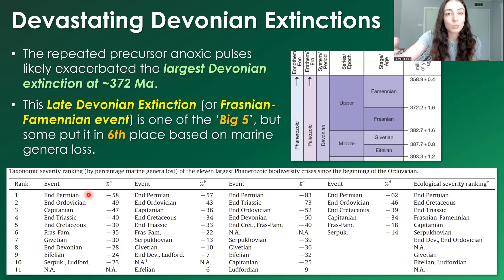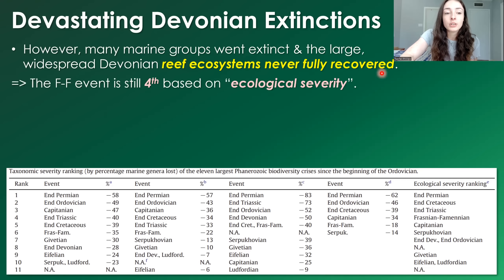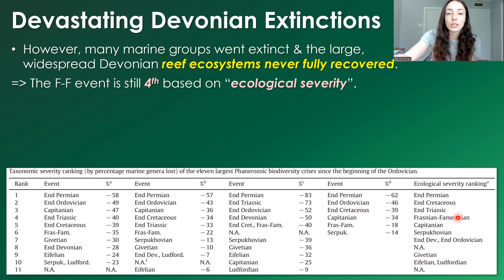You can see in the table at the bottom the ranking of mass extinction events based on different metrics. The first four columns are different studies' rankings based on marine genera loss, and the last column is based on ecological severity. In all rankings there is a common first place: the end Permian or Great Dying event. The end Ordovician is second in most cases. The FF extinction appears in sixth place in two rankings and fifth in two others.